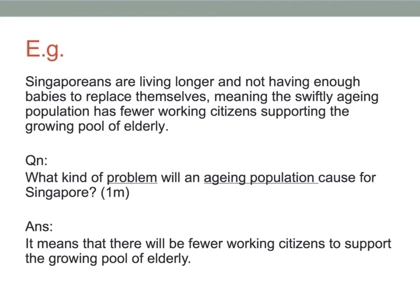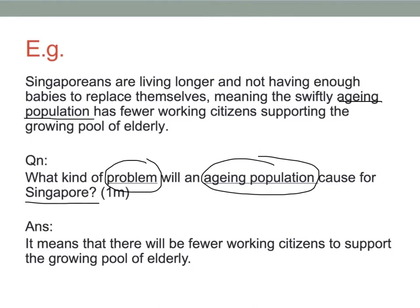Let's look at this example. 'Singaporeans are living longer and not having enough babies to replace themselves, meaning the swiftly ageing population has fewer working citizens supporting the growing pool of elderly.' If you look at the question, it says: what kind of problem will an ageing population cause for Singapore? So there are three key elements in that question that you must be very careful of. It's pretty easy to find where the answer is because you have the phrase 'ageing population' within your paragraph.